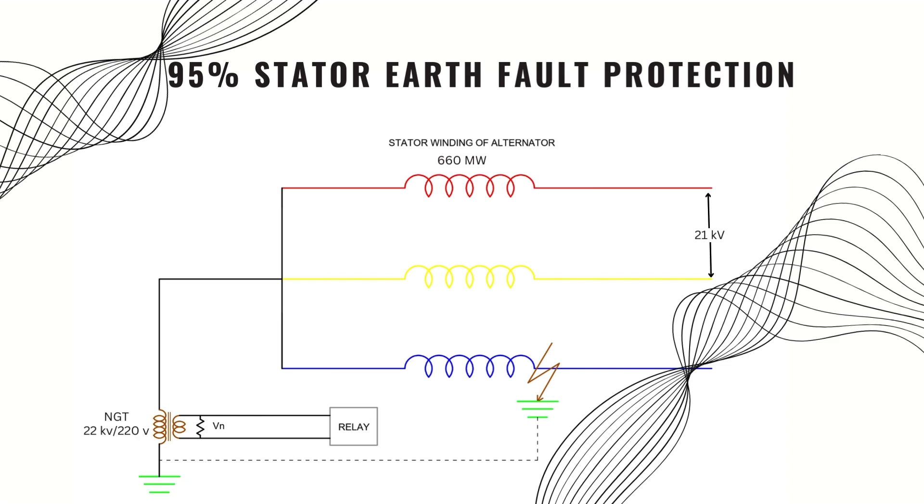Consider a 660 megawatt generator having an output voltage of 21 kV and the ratio of the NGT is 22 kV by 220 volts. The phase voltage of that generator will be 12.1 kV. If any faults happen on 95% point, then only 5% of generated voltage will come across the NGT which is approximately 600 volts and the secondary will be 6 volts.